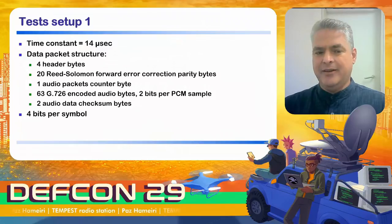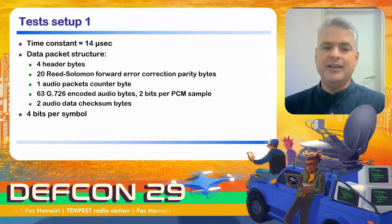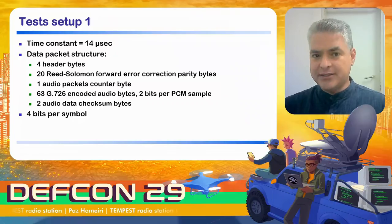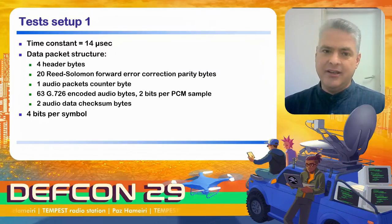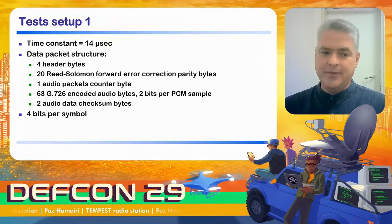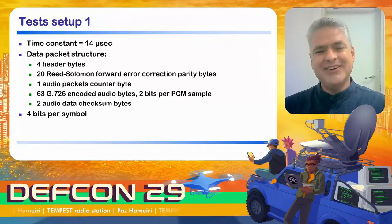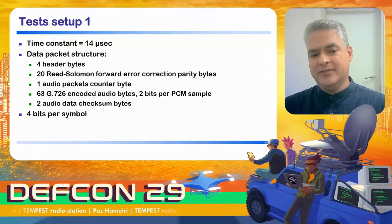For the first batch of tests, the time constant was set to 14 microseconds. The data packet structure was: four header bytes, 20 Reed-Solomon forward error correction parity bytes, a single audio packet counter, 63 encoded audio bytes, two bits per PCM sample encoding, and two audio data checksum bytes. Each packet was transmitted with four bits per symbol — every byte divided into two nibbles.